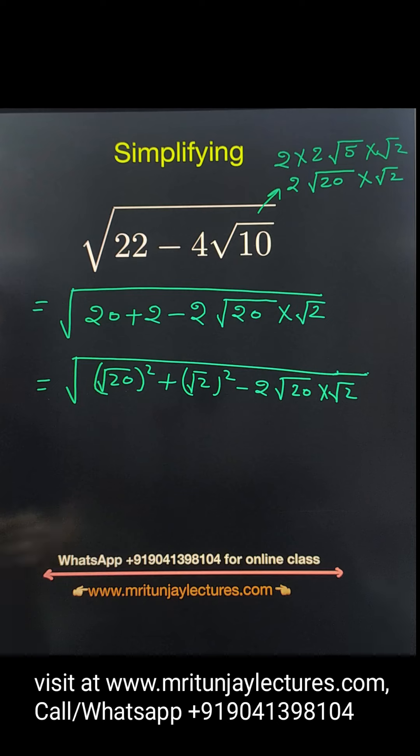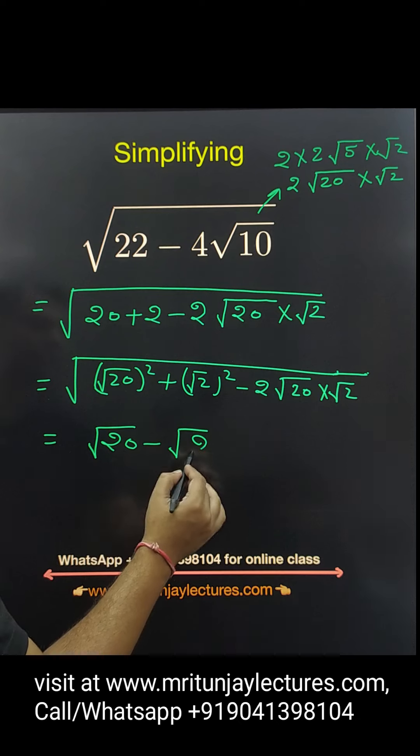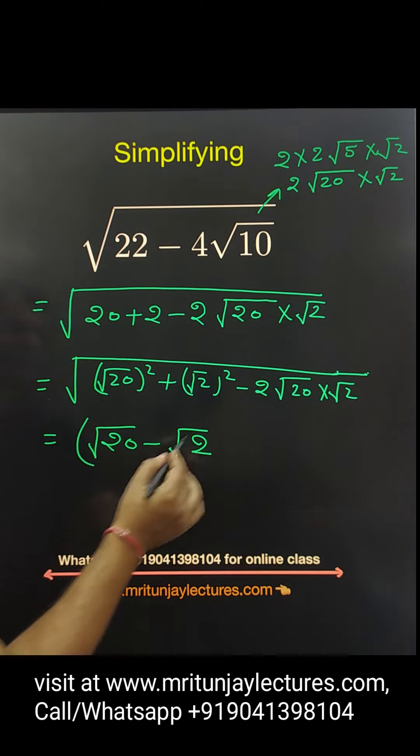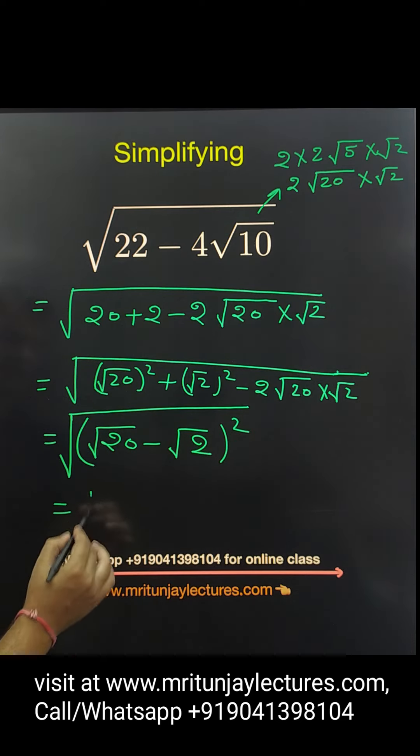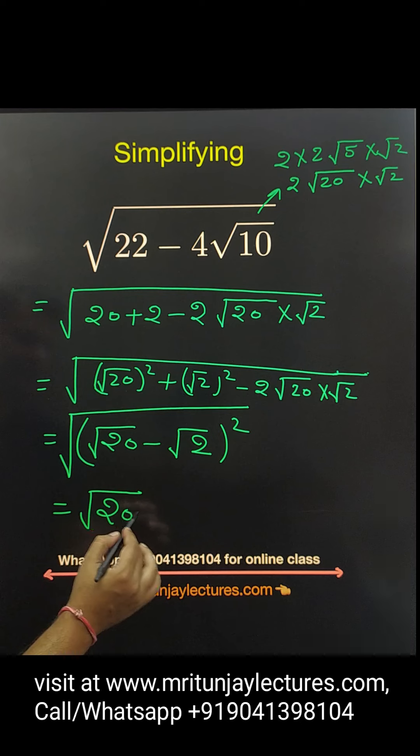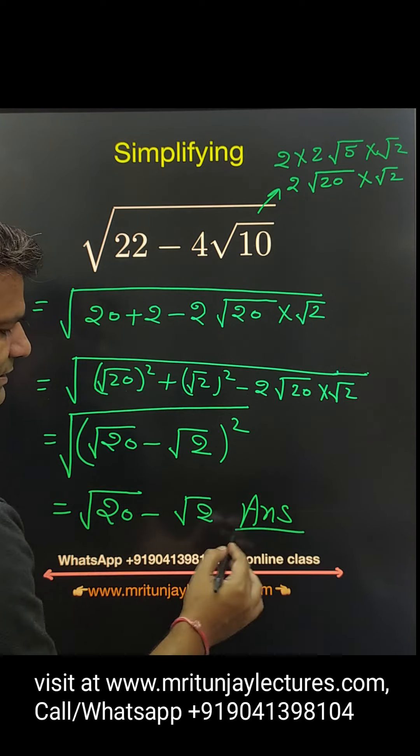OK, so that value is root 20 minus root 2 is the final answer. OK, basically written like that one. So root 20 minus root 2 is the right answer.